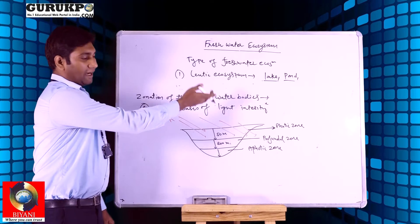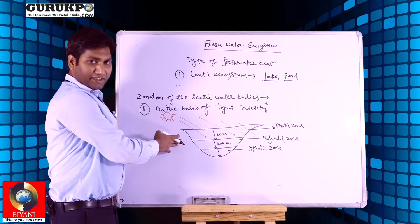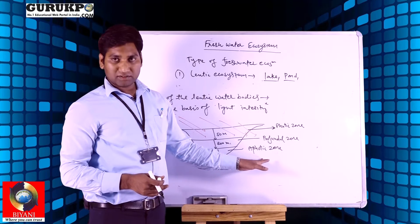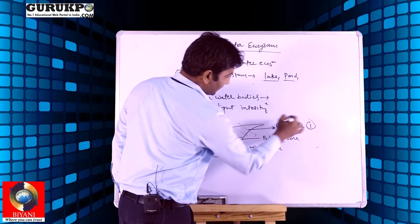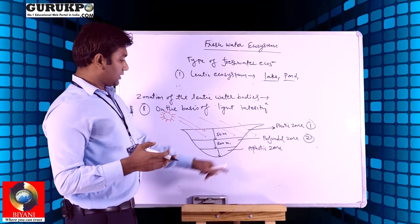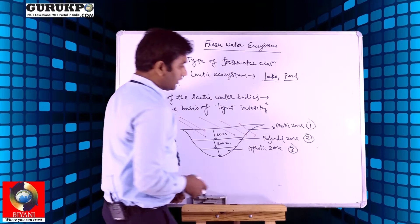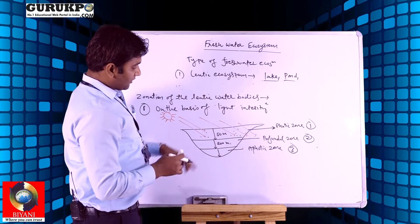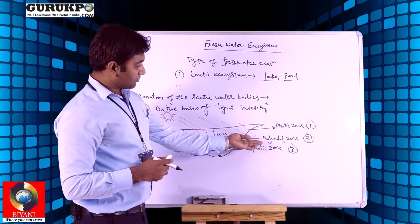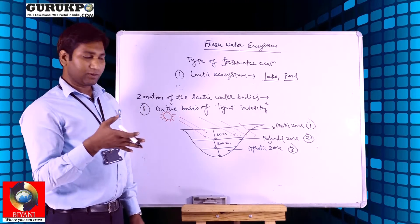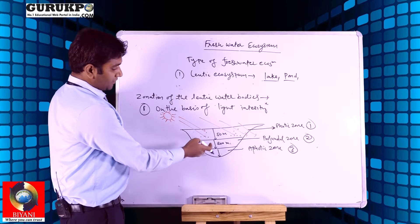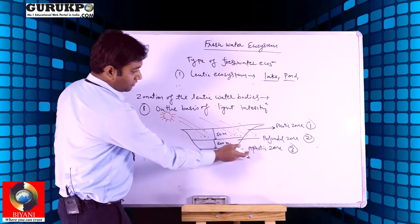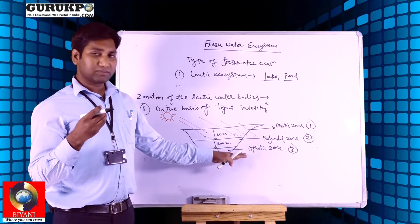On the basis of light intensity, lakes and ponds are further categorized into different zones. The photic zone has proper light, down to about 50 meters. The profundal zone has very low light, with diffuse light possible around 200 meters. Above 200 meters depth where light is low or absent is called the aphotic zone.